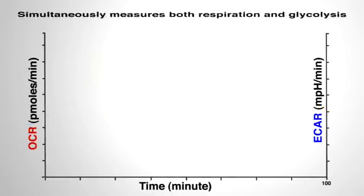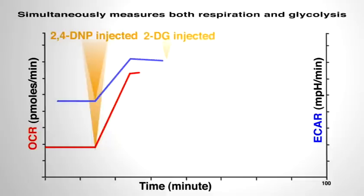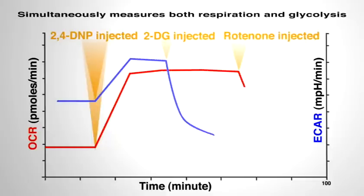The superimposed graphs of this experiment emphasise how the XF analyser simultaneously measures both respiration, OCAR, and glycolysis, ECAR, from which one can detect shifts in metabolic pathway utilisation in real time.